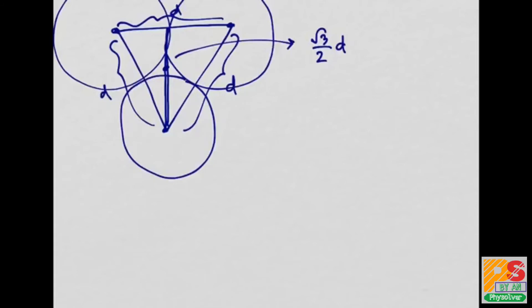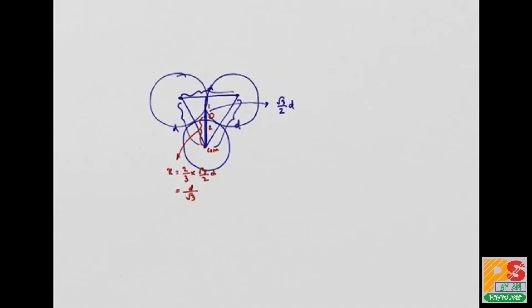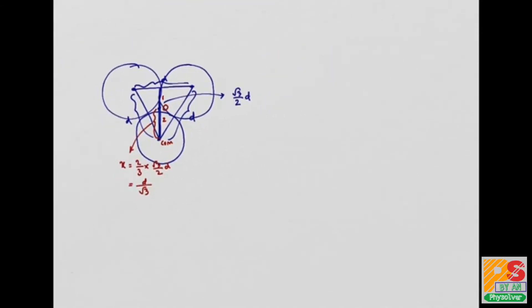And the centroid divides this median into the ratio of 2 is to 1. And we have to find this part, because this is the center of mass of each sphere and this should be the distance X. So the value of X is 2/3 of the height, which is root 3 by 2 times D, which gives D by root 3.